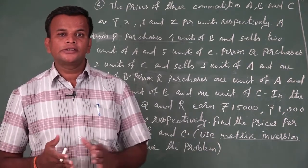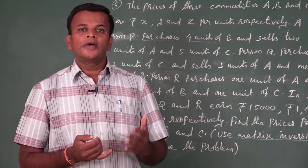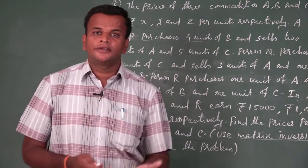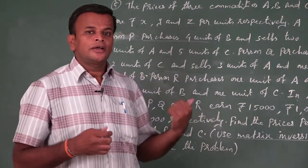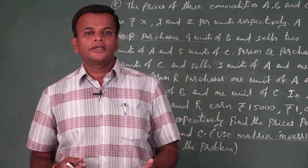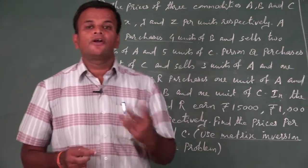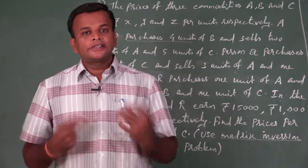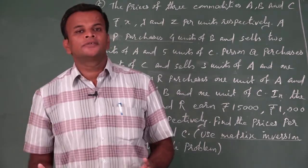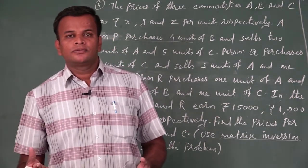The concept of the question: there are 3 persons, all 3 purchase 1 commodity and sell 2 commodities, and in all 3 cases they earn a gain. Now, purchase means buying - when we go to the market and buy an item, we pay money, so purchase is treated as negative. When we sell an item, we receive money, so selling is treated as positive.